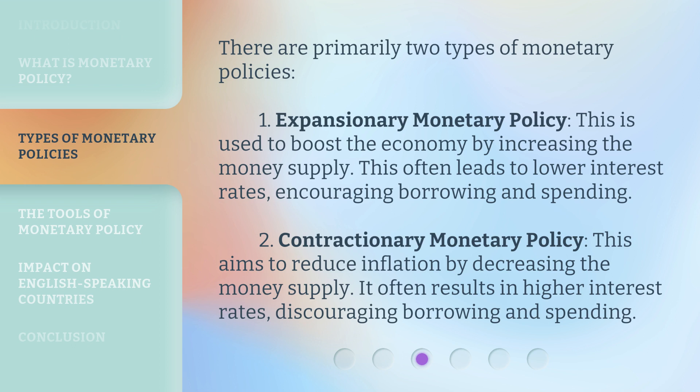There are primarily two types of monetary policies. 1. Expansionary Monetary Policy: This is used to boost the economy by increasing the money supply. This often leads to lower interest rates, encouraging borrowing and spending. 2. Contractionary Monetary Policy: This aims to reduce inflation by decreasing the money supply. It often results in higher interest rates, discouraging borrowing and spending.